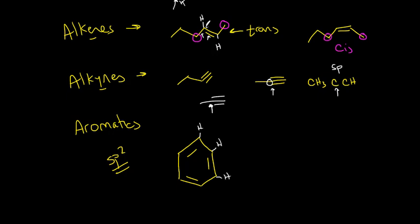If we draw that out, this carbon right here, it has a double bond to one carbon, a single bond to another carbon, and this single bond to hydrogen. So this carbon has an SP2 hybridization. And this carbon looks exactly the same as every other carbon on here. So this is SP2 hybridization.